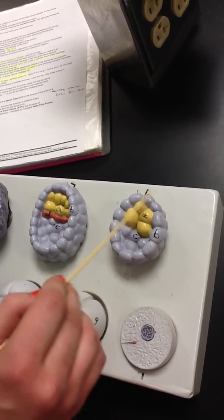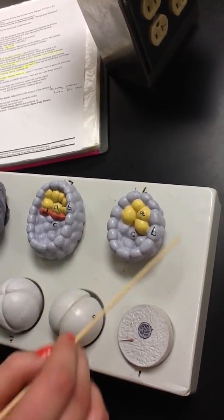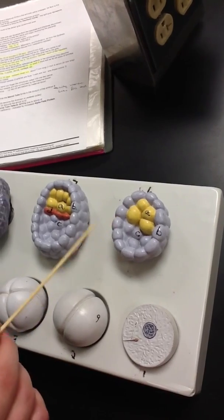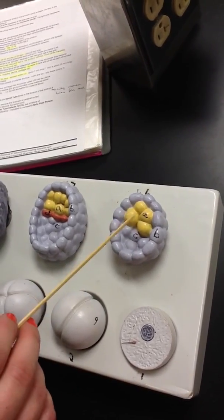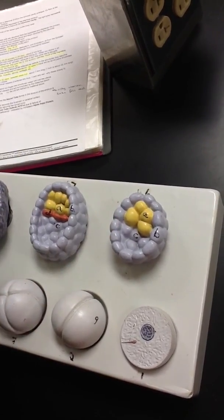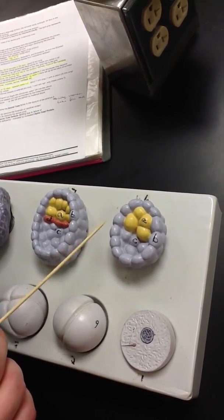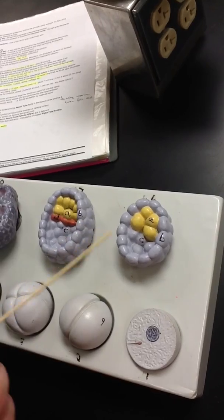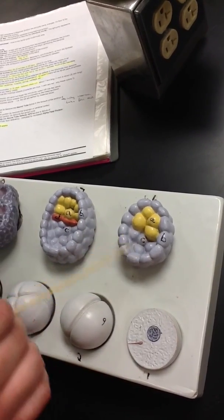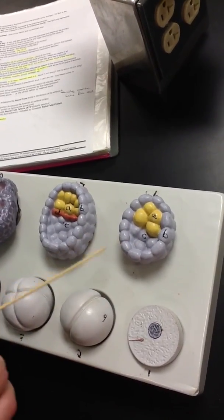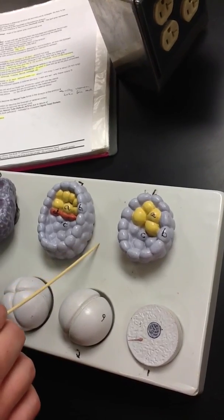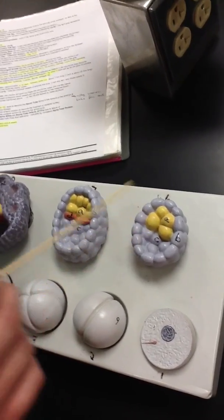The trophoblasts are the outer wall of the embryo that contribute to the placenta and produce HCG, human chorionic gonadotropin. That keeps the corpus luteum functioning. It produces progesterone to maintain the uterus for pregnancy. The blastocoel is this fluid-filled area. Implantation or nidation occurs around day 6 after fertilization, at the blastula stage.